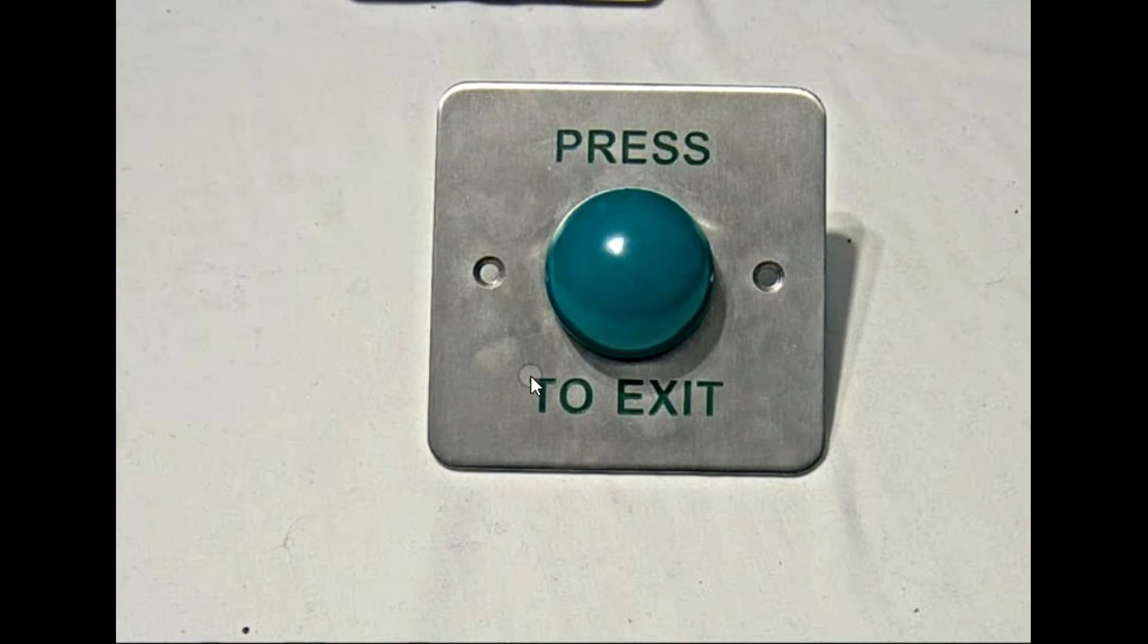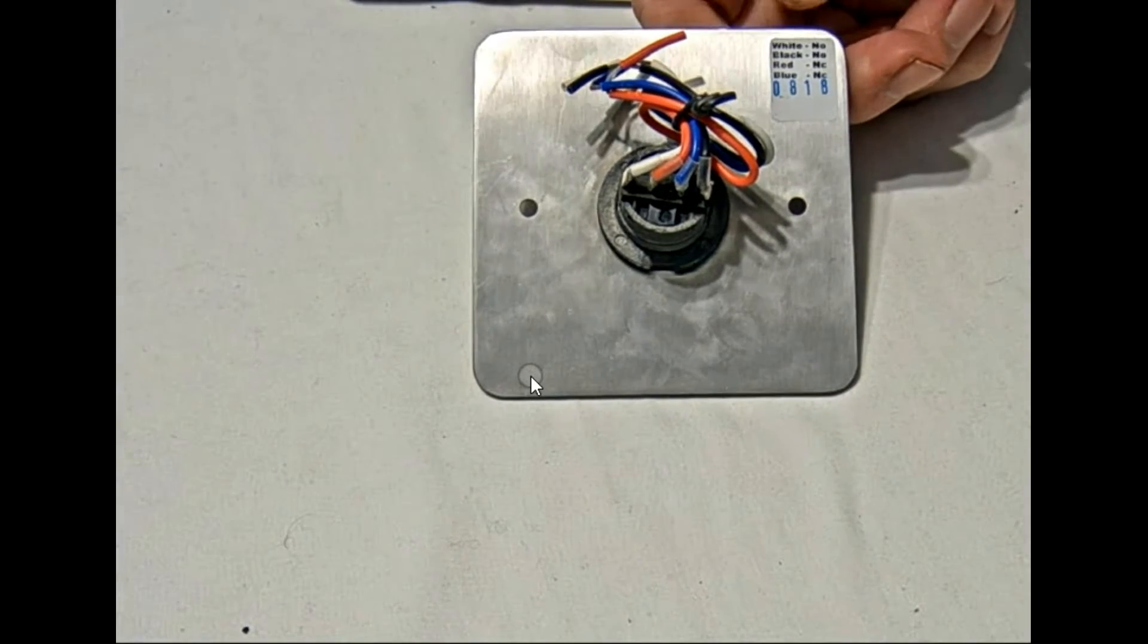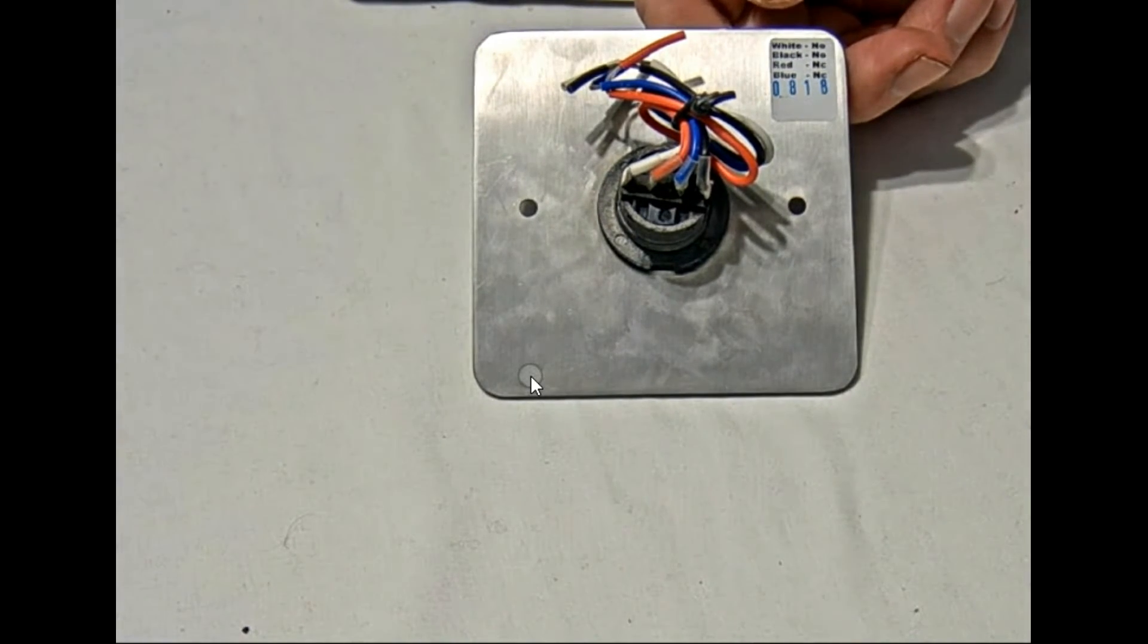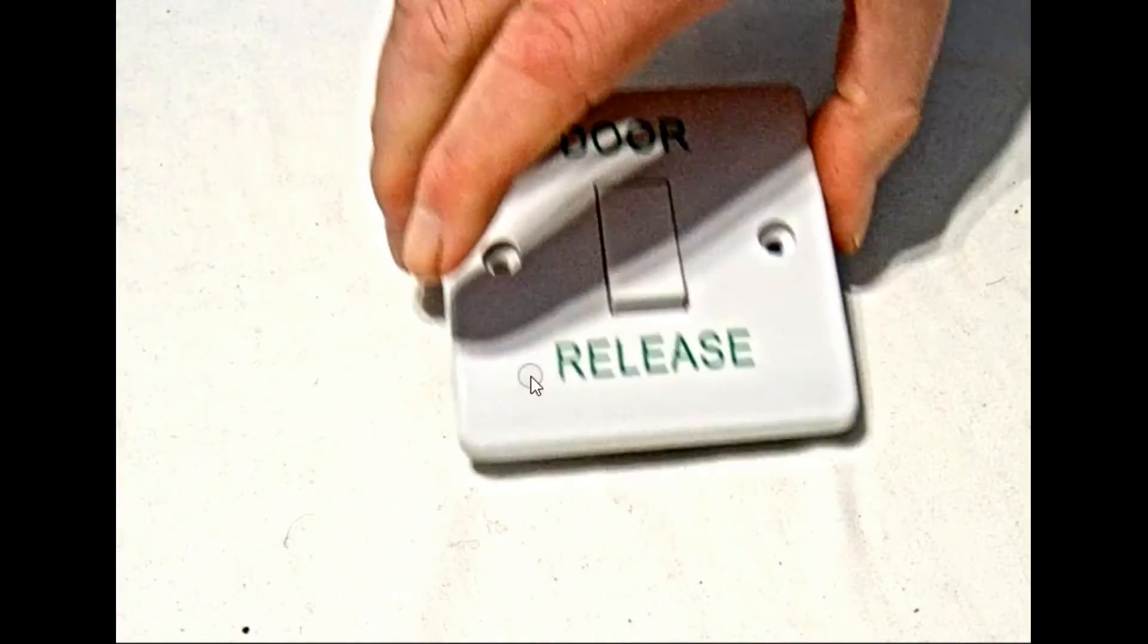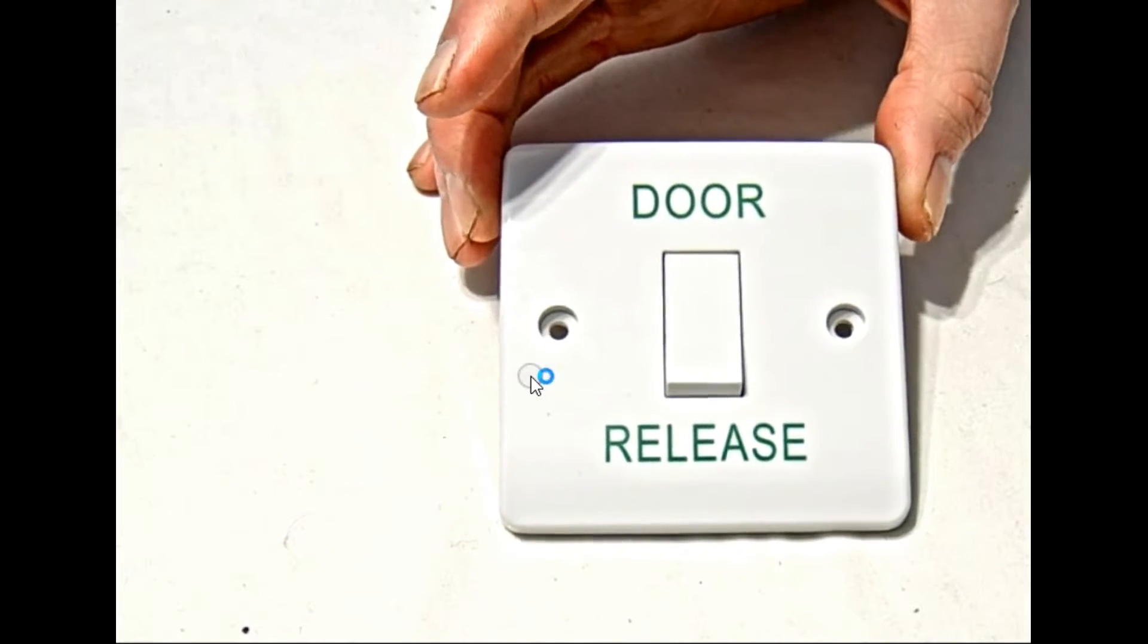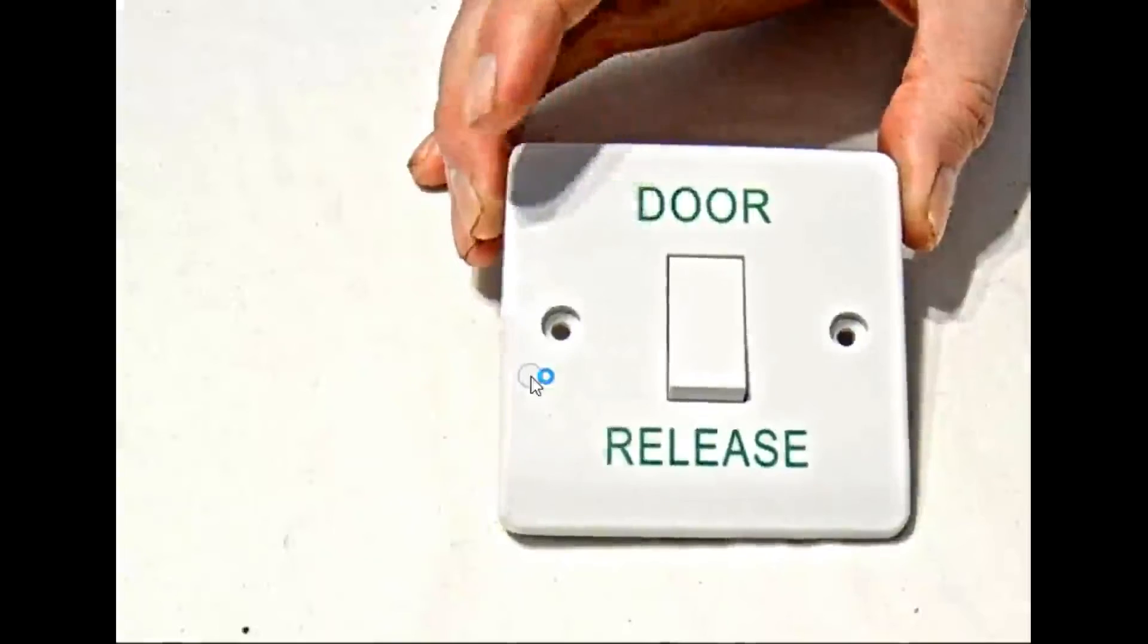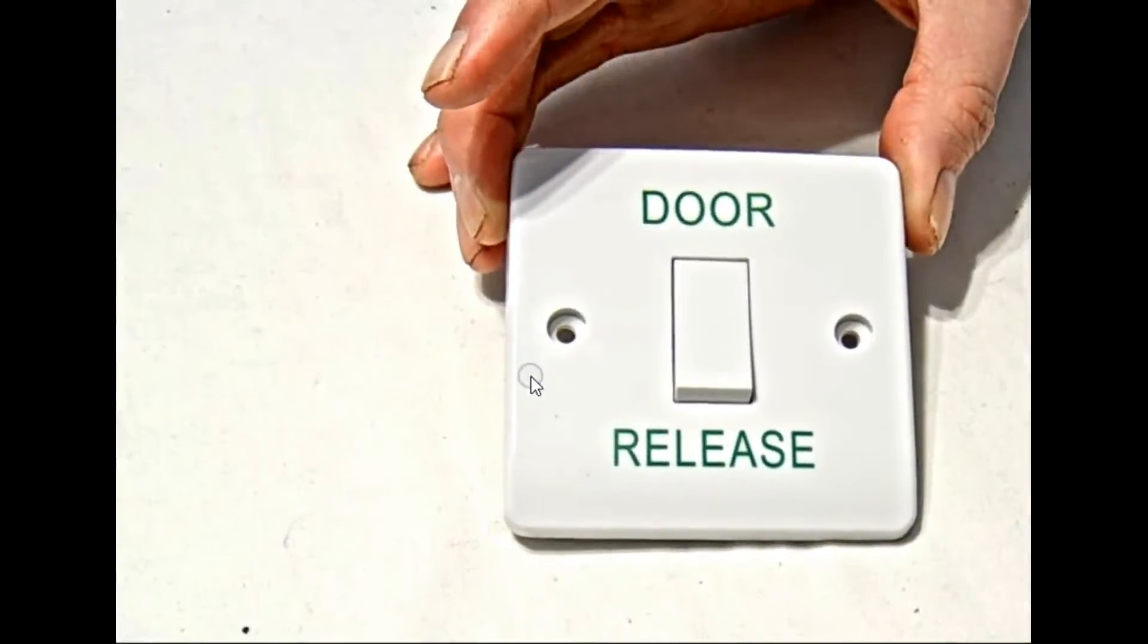We have a selection of push buttons here. The popular green dome exit button, terminated on the back there. And at the top, you can see the normally open, normally closed and common circuits. We have the popular Crabtree style button, RTE 001S, the CDB part number. But we also do quite a few brands who do this type of style of switch.